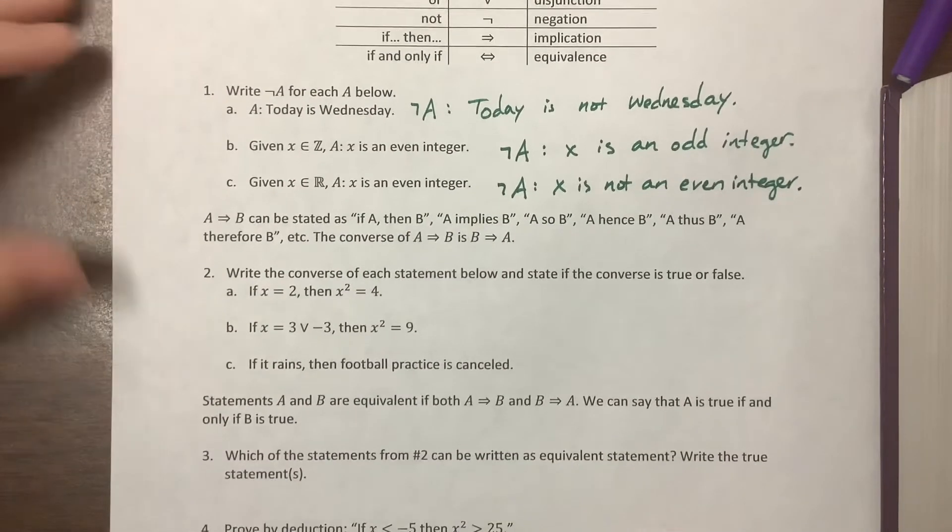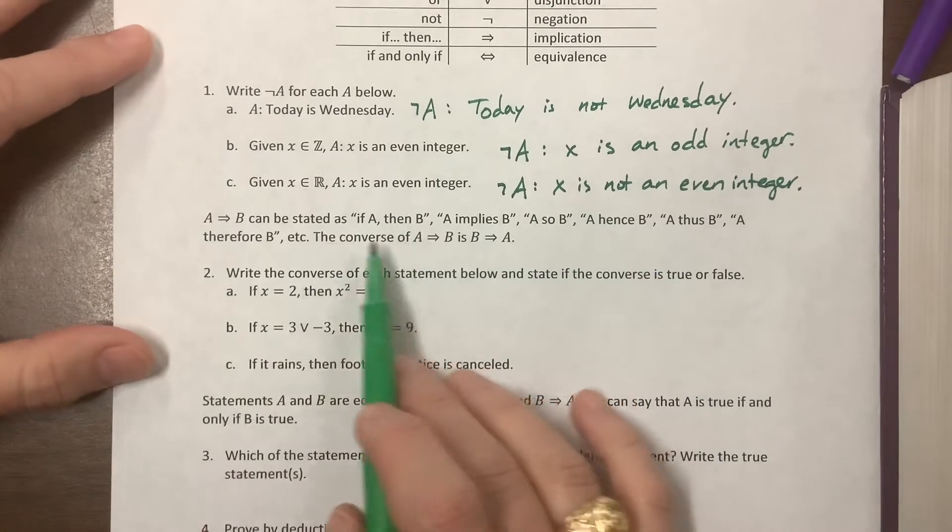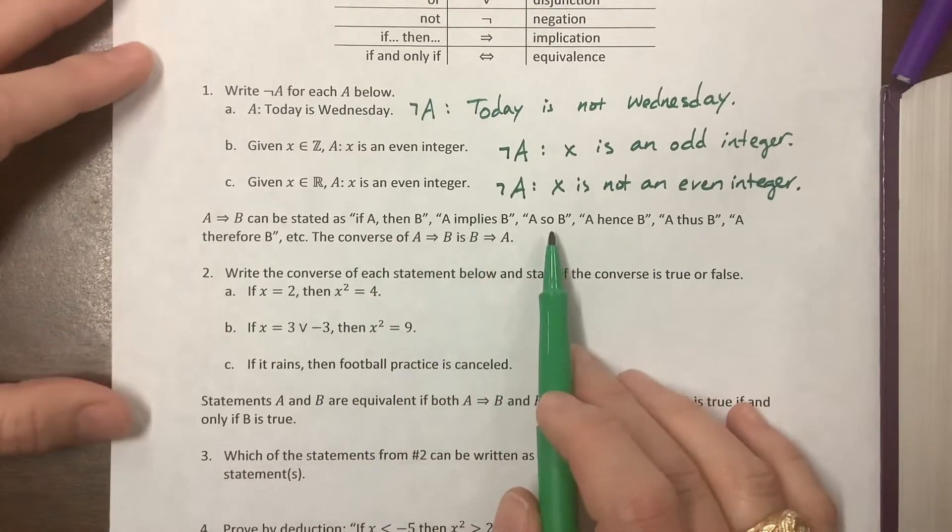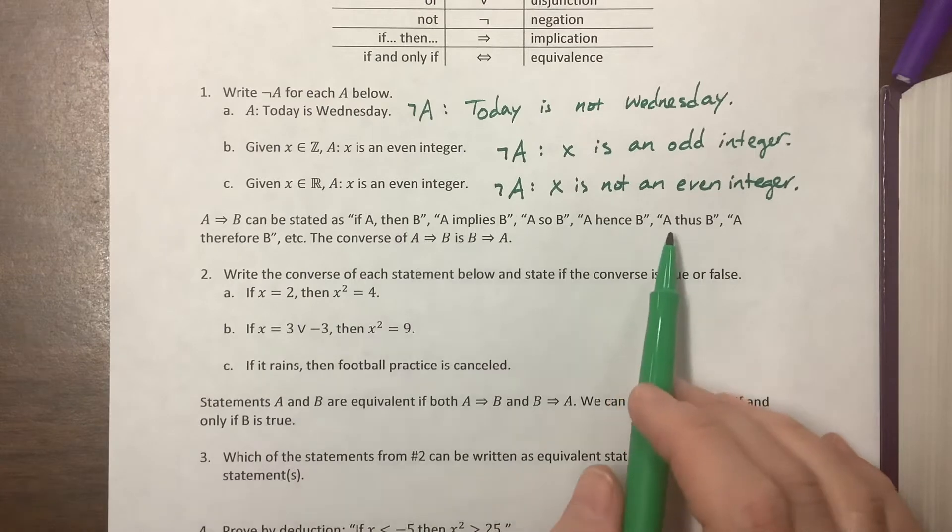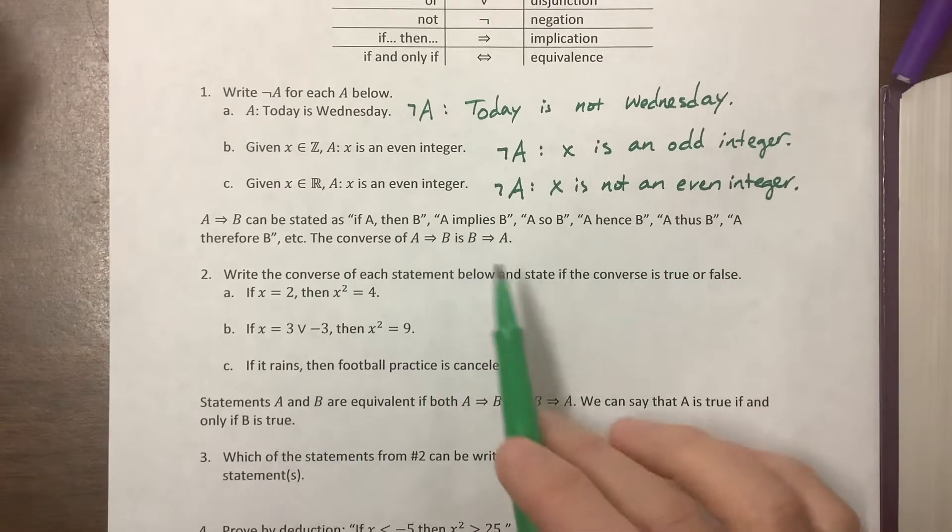The next thing says 'A implies B,' which can be stated as: if A then B, A implies B, A so B, A hence B. These are what our textbook suggested. A thus B, A therefore B.